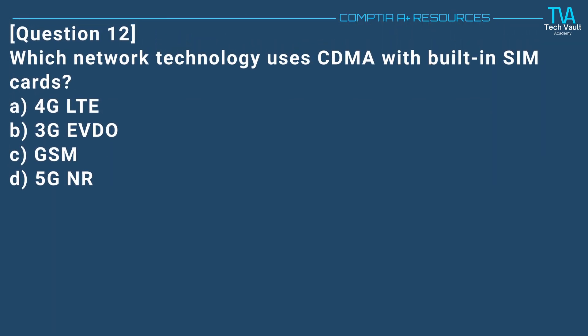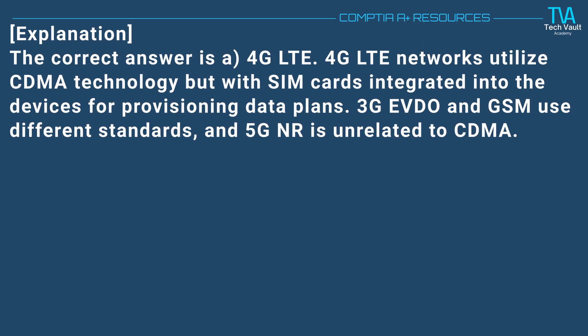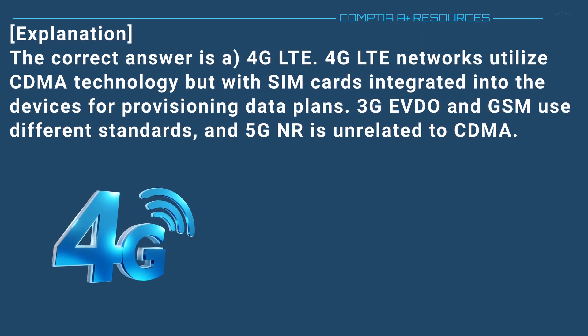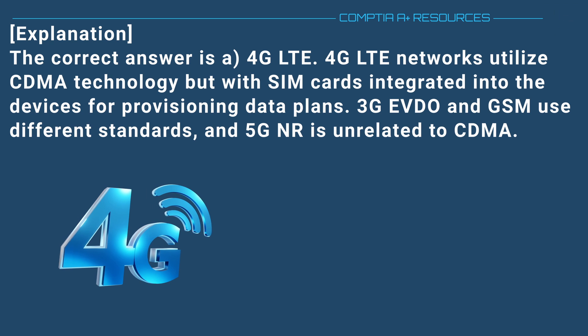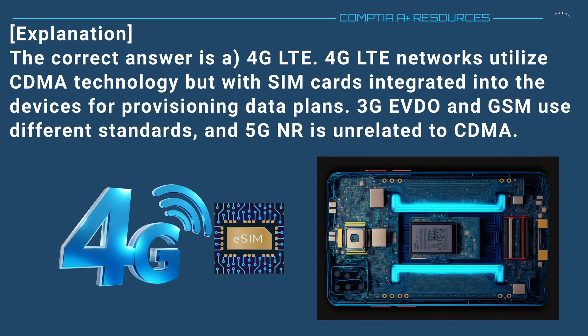Question 12. Which network technology uses CDMA with built-in SIM cards? A. 4G LTE. B. 3G Evdo. C. GSM. D. 5G NR. The correct answer is A. 4G LTE. 4G LTE networks utilize CDMA technology, but with SIM cards integrated into the devices for provisioning data plans. 3G Evdo and GSM use different standards, and 5G NR is unrelated to CDMA.